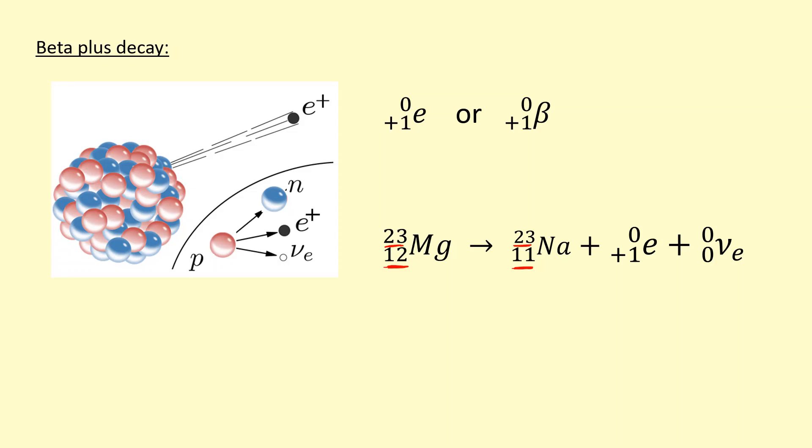Finally we have gamma decay. Gamma decay happens after alpha or beta decay when the nucleus has a bit too much energy and emits a gamma wave. A gamma wave is a really high-frequency electromagnetic wave, so it doesn't have any mass or charge—just zero, zero.